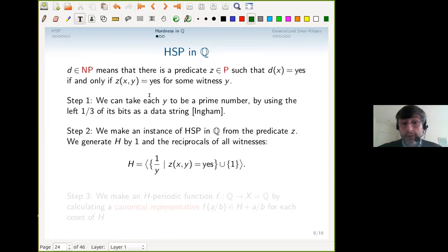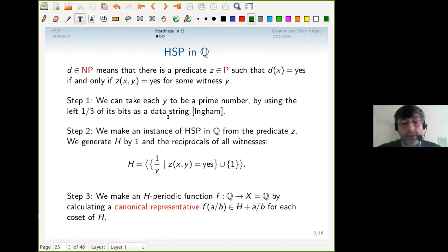Step two: even though we don't know the hidden subgroup, in some way it has to be governed by the problem. I will generate it by one—one will always be present—and by one over y for every accepted prime witness. That's our subgroup. Step three: I want to make an H-periodic function using canonical representatives of the cosets. It's the canonical representative problem, but in an abelian setting. We have H; we want to convert any fraction a/b to a canonical equivalent modulus of periodicity, even though we're looking for H.